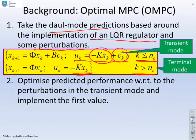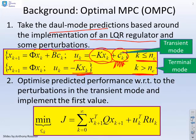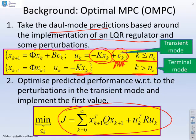What we're going to do is optimize predictive performance with respect to the perturbations in the transient mode — these terms C — but we'll only ever implement the first value. Therefore, what we're trying to do is minimize our performance index, set over an infinite horizon with respect to these perturbations in the transient mode CK.